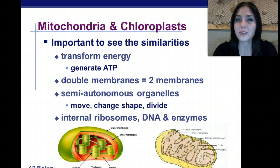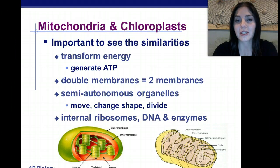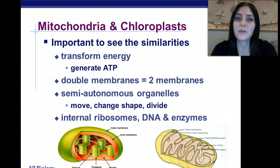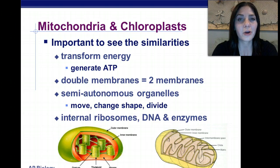It's important to see the similarities between mitochondria and chloroplasts. They both transform energy and generate ATP. They both have double membranes, and they are both semi-autonomous organelles, meaning they can basically exist by themselves. They both move, change shape, and divide. They have their own internal ribosomes, their own DNA, and their own enzymes.